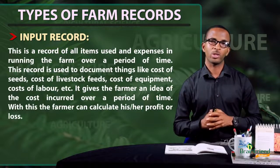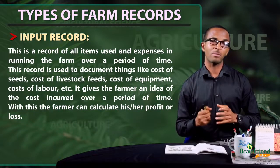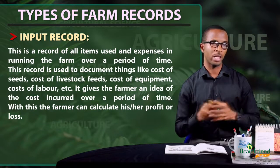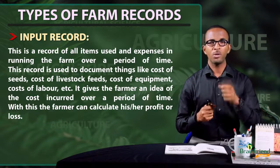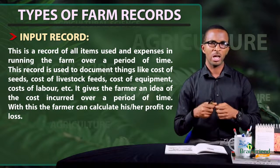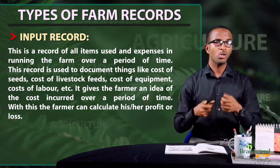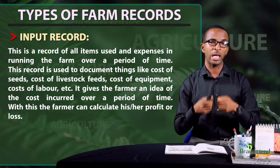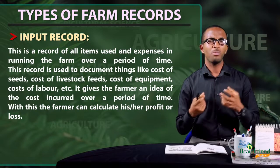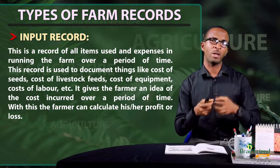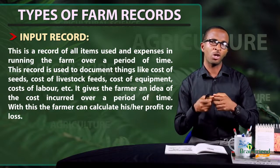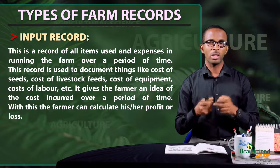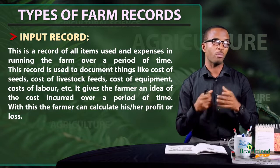Input record: this is a record that contains all items as well as money spent running the farm over a period of time. Things like cost of seed, cost of livestock, cost of equipment, cost of labor, etc. are documented in it. This input record gives the farmer an idea of the amount of money incurred over a period of time, and with this record the farmer is able to calculate his profit or loss.